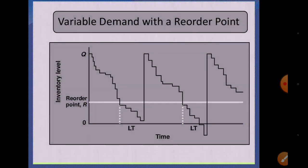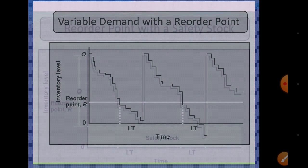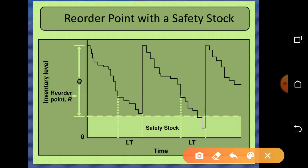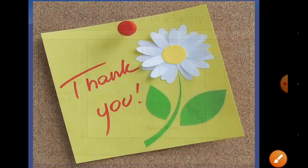Now variable demand with the reorder point — this is shown in the next graph. The x-axis represents time and the y-axis represents inventory level in quantity. The reorder point is R, and the safety stock level is also indicated on this graph.